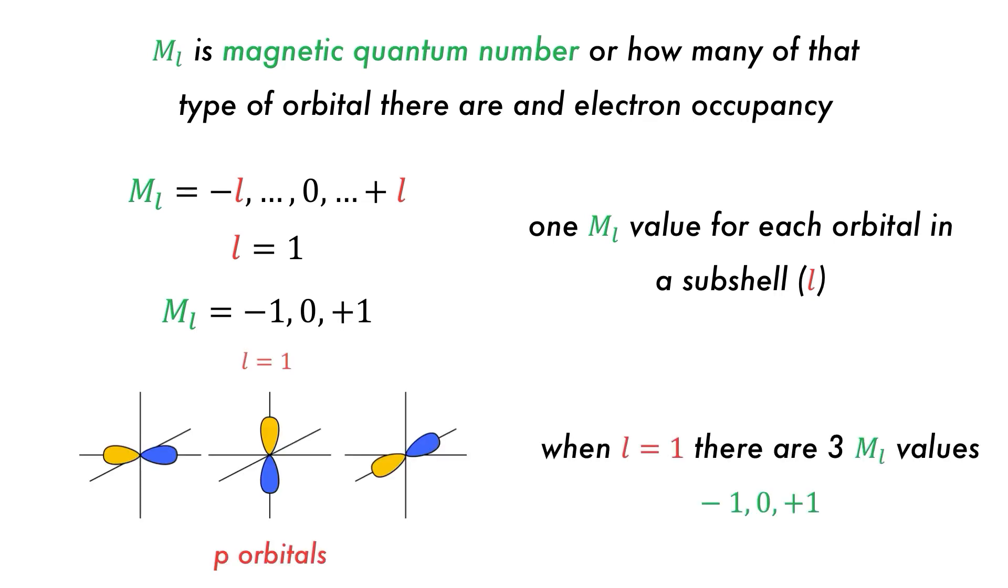When L is equal to 1, there are three ML values: minus 1, 0, and plus 1. This means that there are three orbitals in the L is equal to 1, or p, subshell.